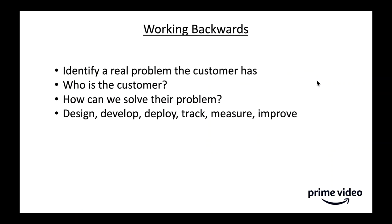Amazon's overall goal is to be Earth's most customer-centric company. We use a mechanism called working backwards — to start building solutions, we make sure we're solving a real problem by speaking to our customers or getting into their mindset. For my team, our customers are other software engineers, so we just go and sit at their desks and ask them questions. That's what we did when we started the team.